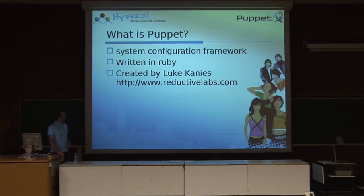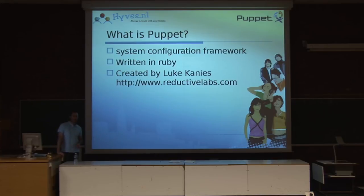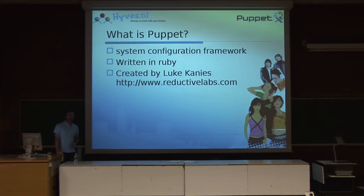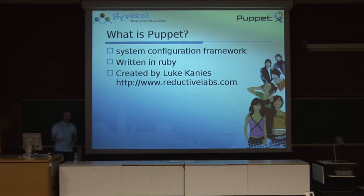Puppet is a system configuration framework. You describe what you would like to do in Puppet manifests. You could say, I want to have Apache started, or I want to manage my /etc/password file, or my hosts file. It's entirely written in Ruby, so you have to install Ruby to be able to use Puppet. It was created by Luke Canis, who was fed up with CFEngine and other tools because they lacked an abstraction layer — you had to write everything for the specific environment. With Puppet, that's much easier because it detects which Unix system you are on, and you can almost use the same code.